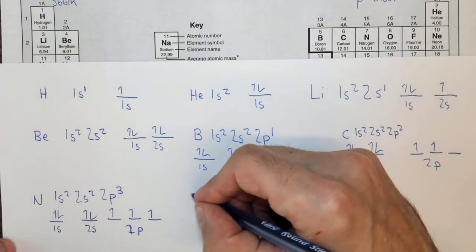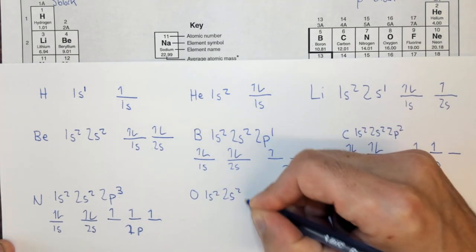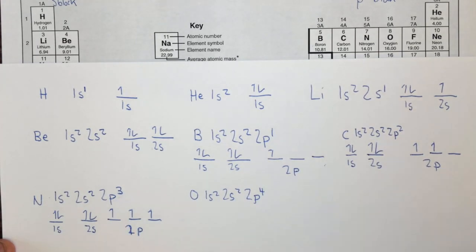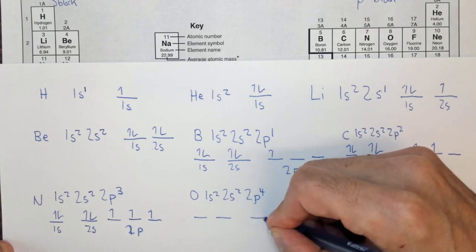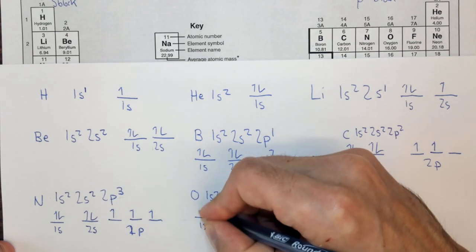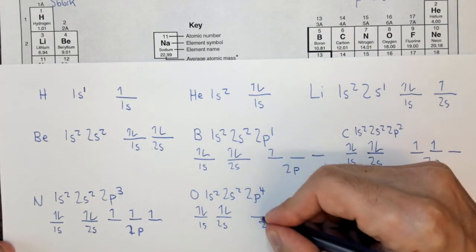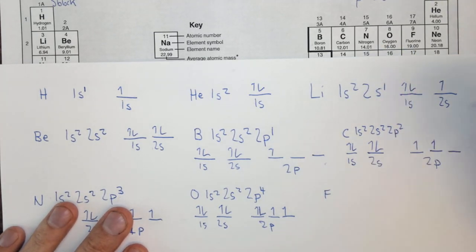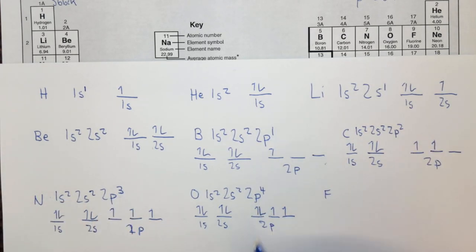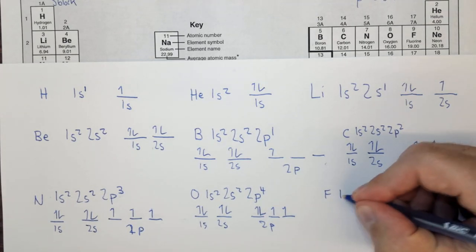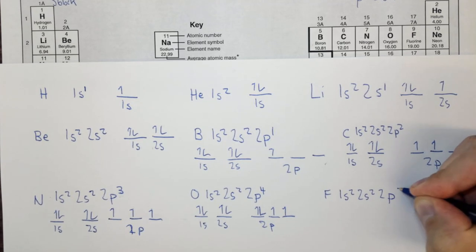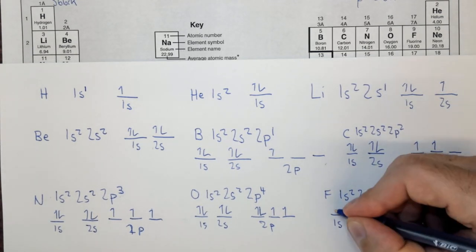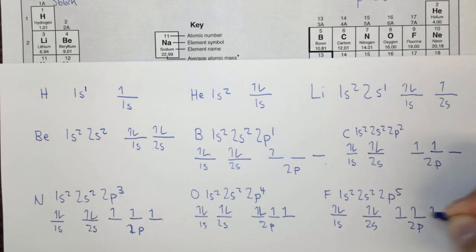Oxygen is 1s² 2s² 2p⁴ — one more electron than nitrogen, still in the p block. The box diagram shows 1s and 2s full, then 2p with electrons up, up, up, and then the fourth electron paired down in the first orbital. Fluorine is one more than oxygen: 1s² 2s² 2p⁵. The box diagram shows 1s, 2s full, and 2p with five electrons placed as up, up, up, down, down.